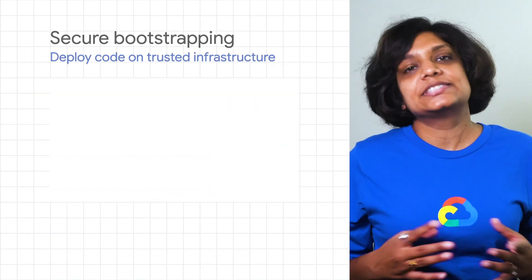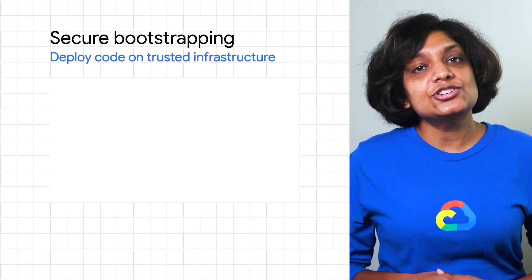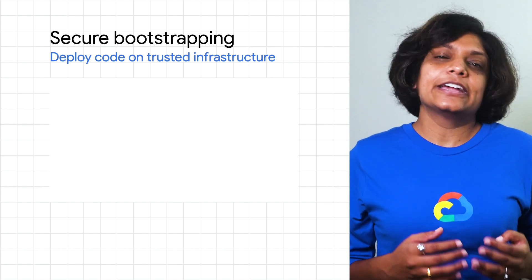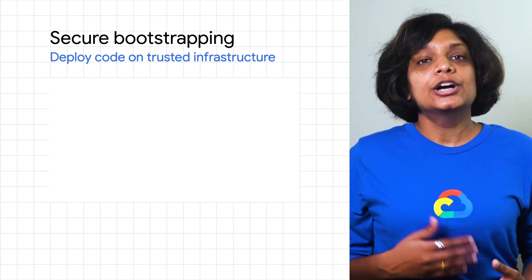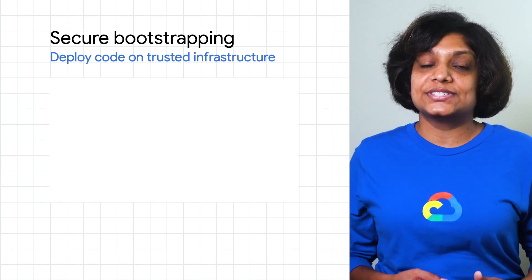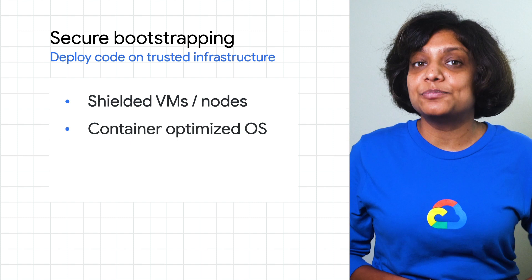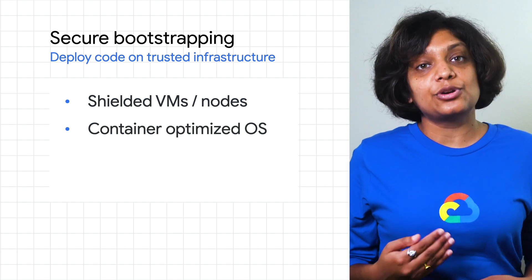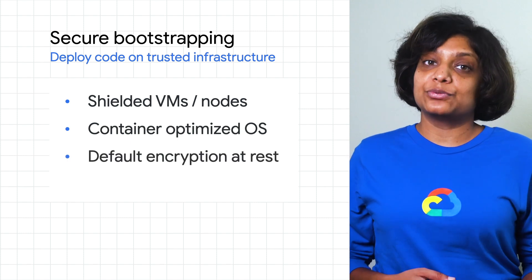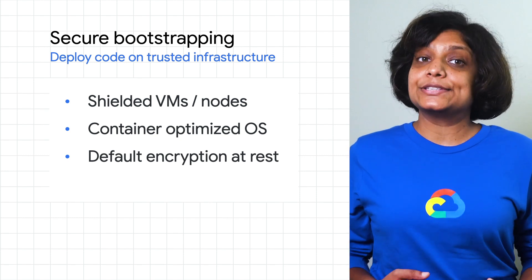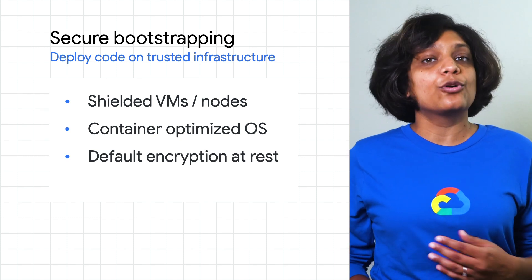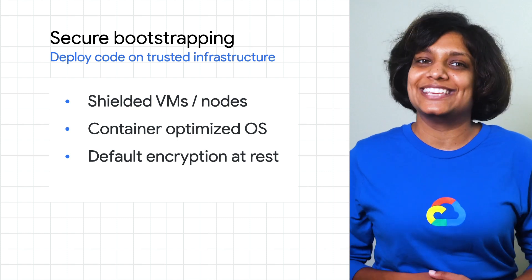Let's see why you need these and how Anthos helps you accomplish them. First, secure bootstrapping — this is essential because any issues here can quickly affect multiple services shared in your infrastructure. Google Cloud provides you with features such as shielded VMs, container-optimized OSes to reduce your risk surface, and encryption at rest to prevent unauthorized access. You also have access to hardening guides to help you incorporate best practices on-premises.